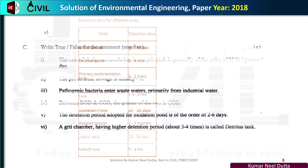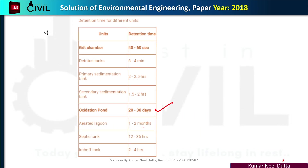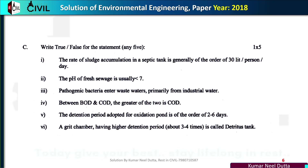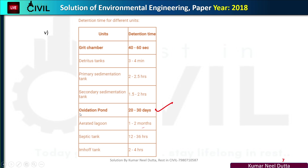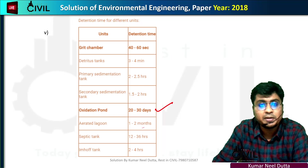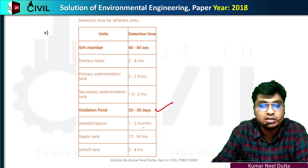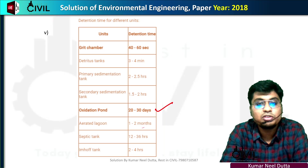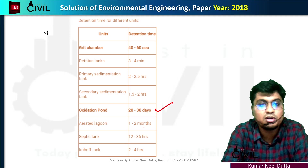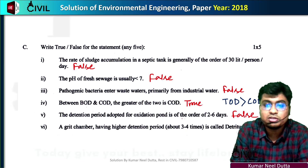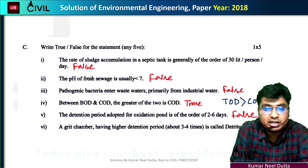The detention period for an oxidation pond is actually 20 to 30 days, not 2 to 6 days — so that statement is false. For a septic tank, the detention period is 12 to 24 hours. A grit chamber having a higher detention period is called a detritus grit chamber — this is true.